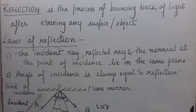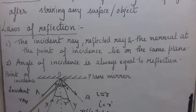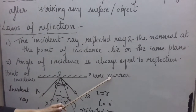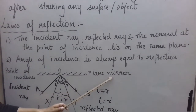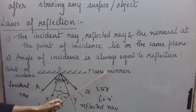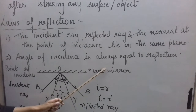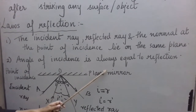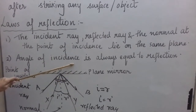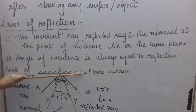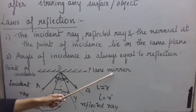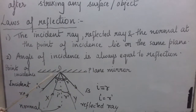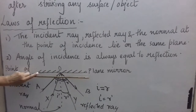Let us understand this law using this diagram. A plane mirror is a mirror which we generally use at home to look at ourselves. A mirror is actually a simple thin flat glass plate which is polished on the back side with aluminium or silver. A very thin layer of aluminium or silver is deposited on the back side, forming a shining surface — this is called a plane mirror. If we draw a line here, we are representing a plane mirror, and this polishing shows that the other side is reflecting.